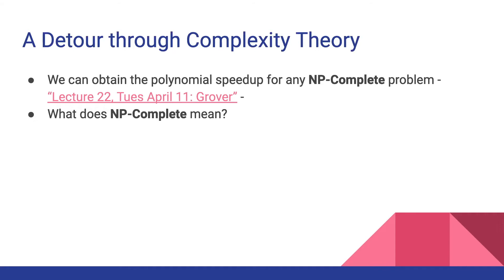Now that you know what Grover's algorithm does — it lets us invert functions — Scott Aaronson says we can obtain a polynomial speedup for any NP-complete problem. The polynomial speedup: worst case in the classical world is O(n), but for the quantum computer it's O(√n) — we consider that a polynomial speedup. For any NP-complete problem, if you come from a computer science background, NP-complete and P vs. NP are very familiar. But we have an interdisciplinary audience, so it's worth explaining what NP-complete actually means — that's why I call this a detour through complexity theory.